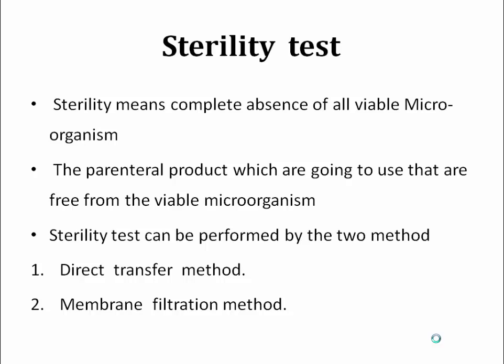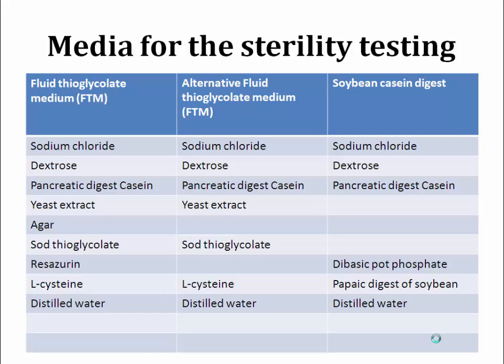The first test is the sterility test. Sterility is the complete absence of all viable microorganisms present in the cells — meaning our parenteral product is free from viable microorganisms. For detection of sterility, we can use two methods: first, the direct transfer method, and second, the membrane filtration method.